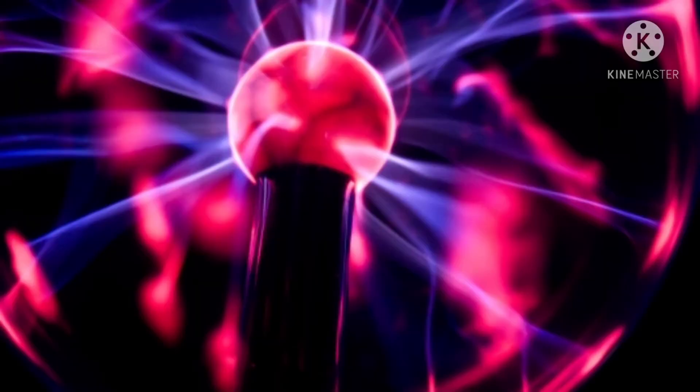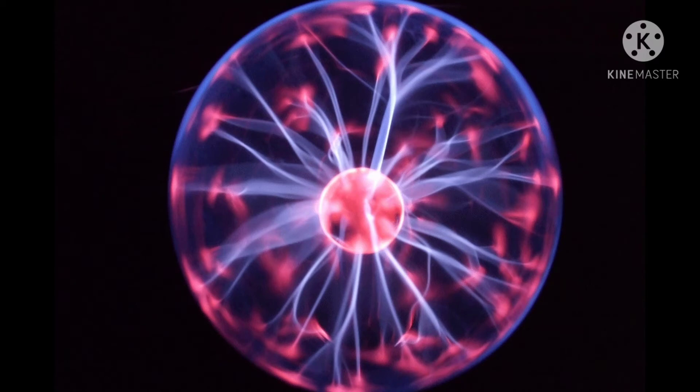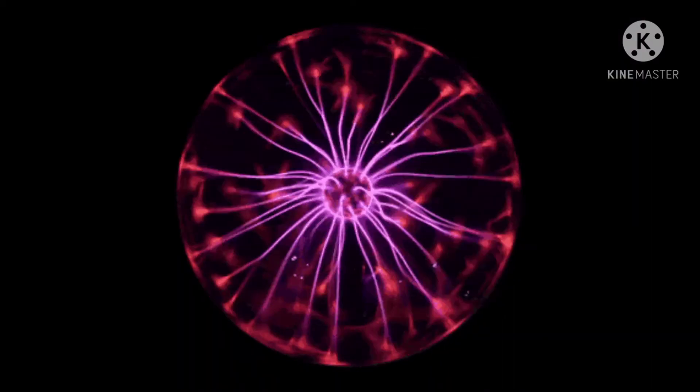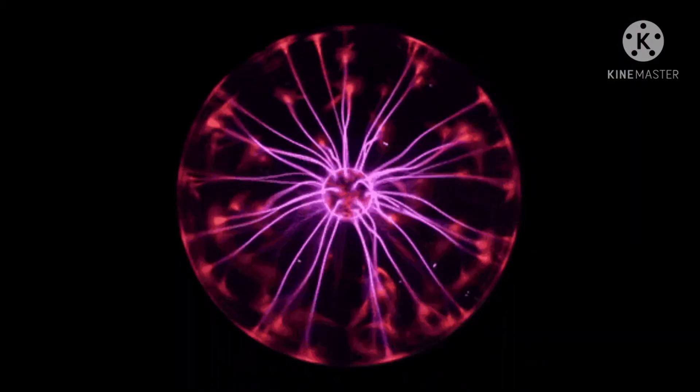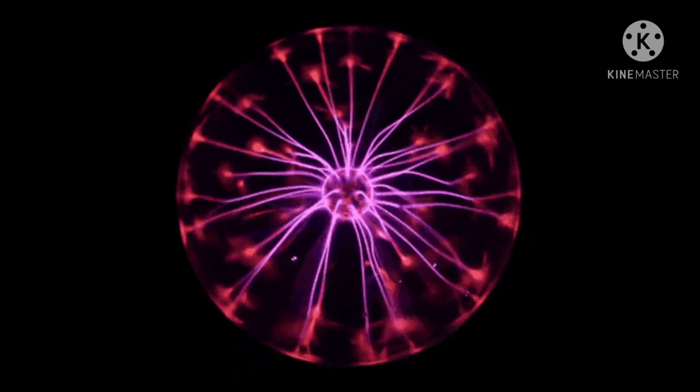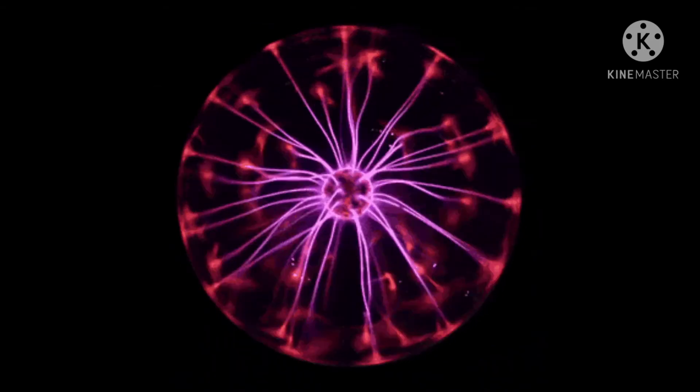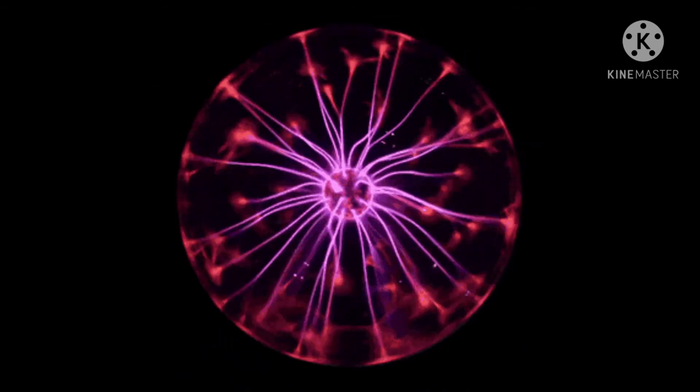Matter at such a high temperature comprises a mixture of electrons and ions, i.e., a plasma. The fusion power released at such a high temperature is much greater than the energy lost by radiation.